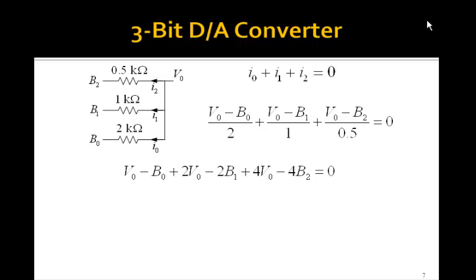Multiplying through by 2, we get V0 minus B0 plus 2V0 minus 2B1. And then we have 2 divided by 0.5. So we'll have plus 4V0 minus 4B2. And collecting the V0s, we have 1 plus 2 plus 4. So we have seven V0s. And moving the Bs over to the other side, we've got 4B2 plus 2B1 plus B0.